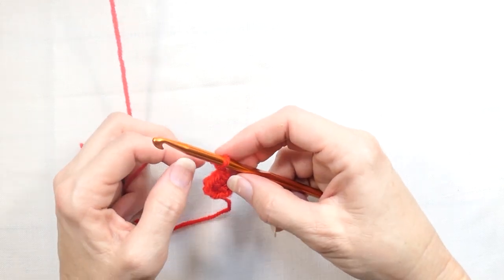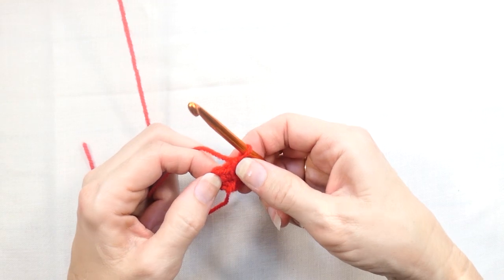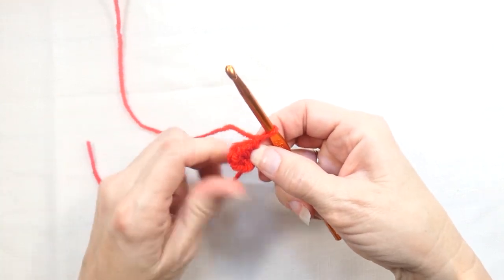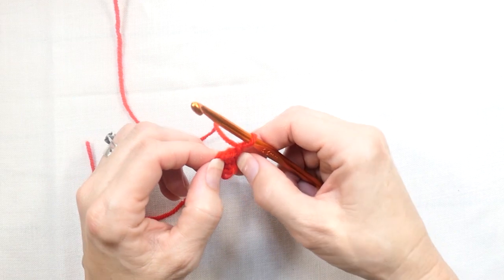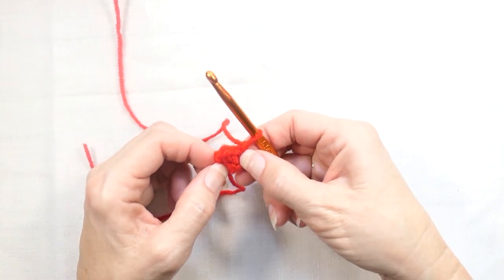Now the reason you want to do this is in some patterns or sometimes when you work in a magic ring it can come loose and you have to keep on pulling the tail to make it tight. So if you do this one this magic ring will not come loose so it will remain tight right like this.